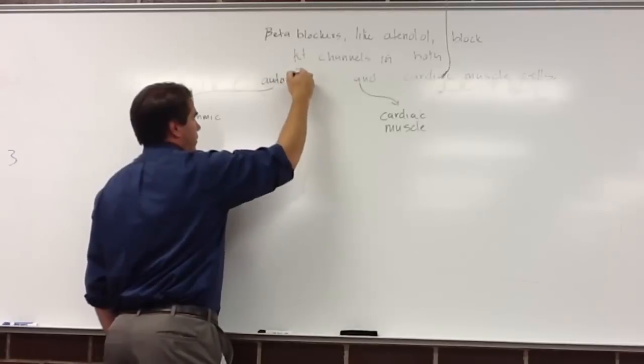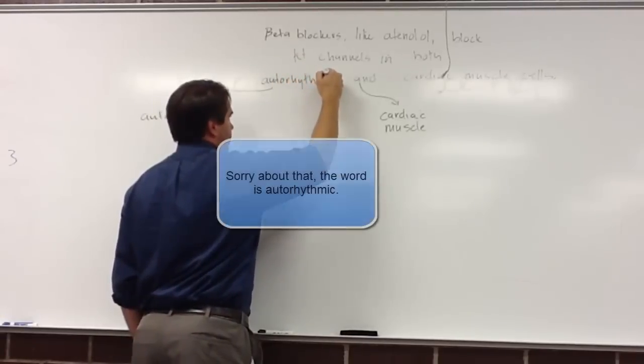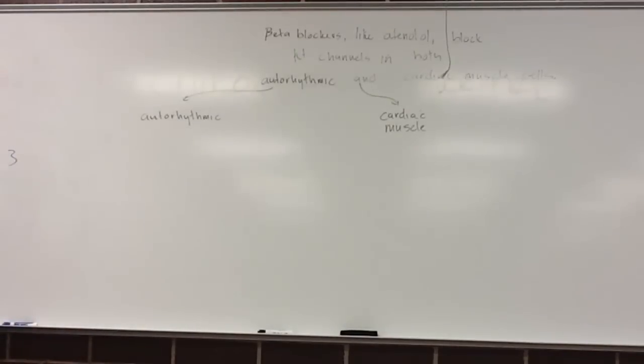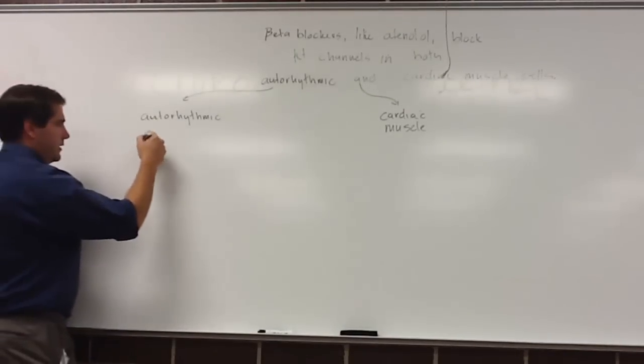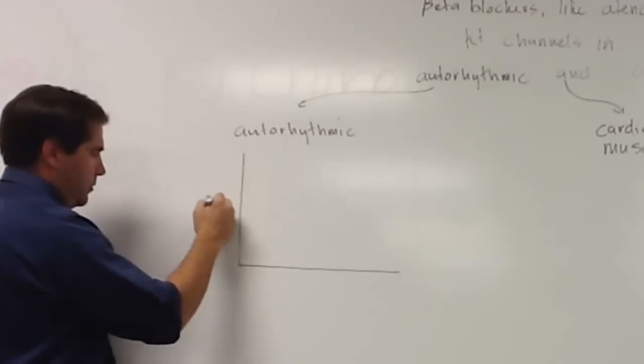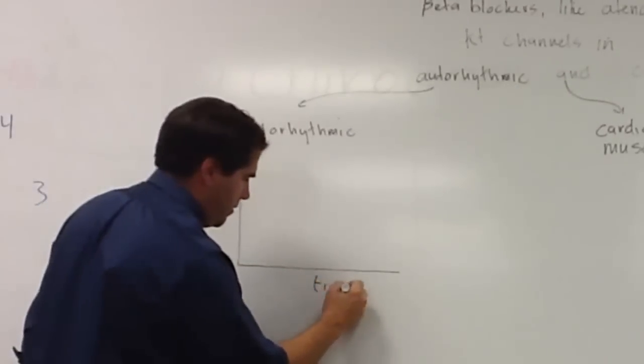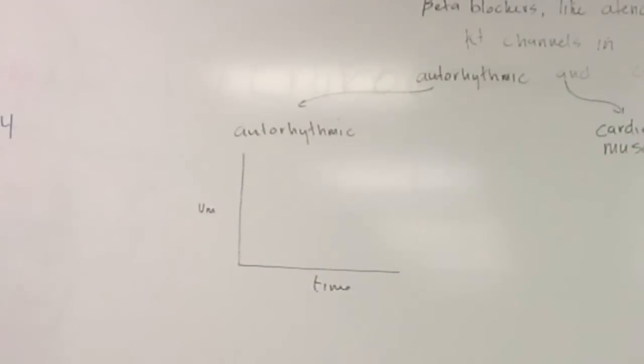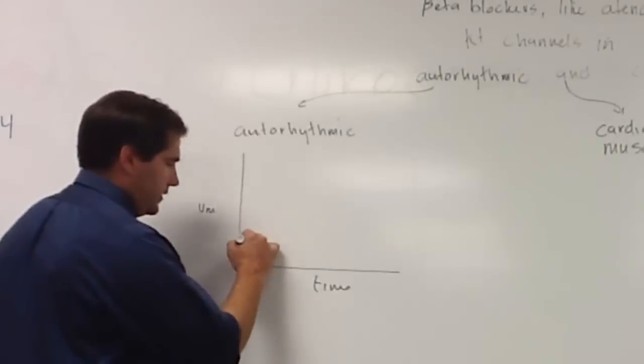Autorhythmic is one of those words where you have to write it really fast, otherwise you don't get it right. So the way I would answer this question is I would say I'm going to draw an action potential. So I would say normally an autorhythmic cell looks like this.